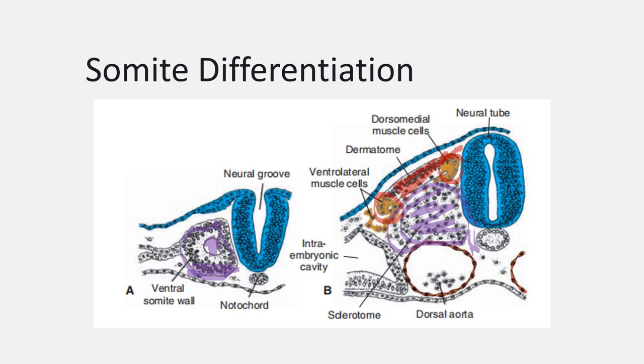When somites first form from the presomitic mesoderm, they exist as a ball of fibroblast-like mesoderm cells. These cells undergo a process called epithelialization and arrange themselves into a donut structure around a small lumen. By the beginning of the fourth week, cells in the ventral and medial walls of the somite lose their epithelial characteristics and become mesenchymal again. As they become mesenchymal, they shift their position to now surround the neural tube and also the notochord. Collectively, these cells form the sclerotome that will differentiate into the vertebra and the ribs.